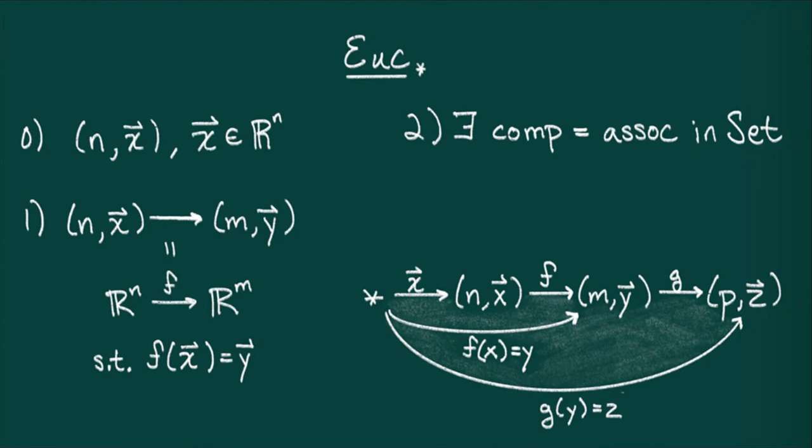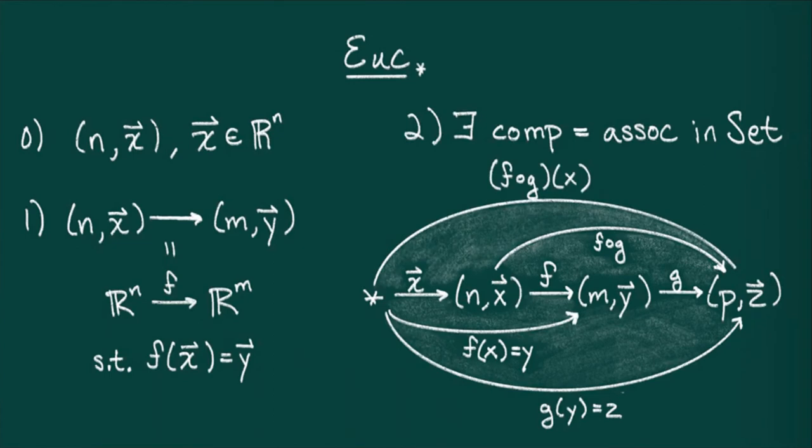Alternatively, I could compose the middle and right map to obtain f composed with g. I can further compose this map to obtain f composed with g evaluated at x. Note that this diagram is the associativity diagram introduced in the same lecture, and so the top map coincides with the bottom map. Therefore, the data I've written down forms a category.